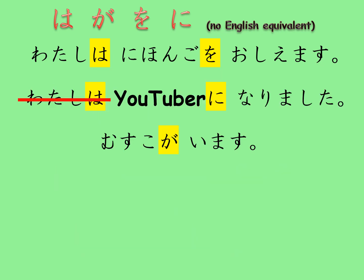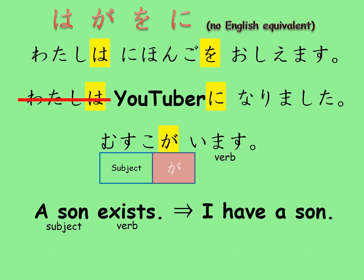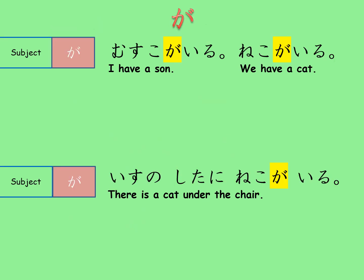While watashi is still the topic, if I introduce a new sentence 'musuko ga imasu' — whose literal meaning is 'a son exists' — it actually means 'a son exists for me,' or more like 'I have a son.' Here, musuko is the subject of the verb 'imasu' (exists), and for that we use the subject marker ga. I usually tell beginners to remember the occasions when ga is preferred over wa, and here are those occasions.